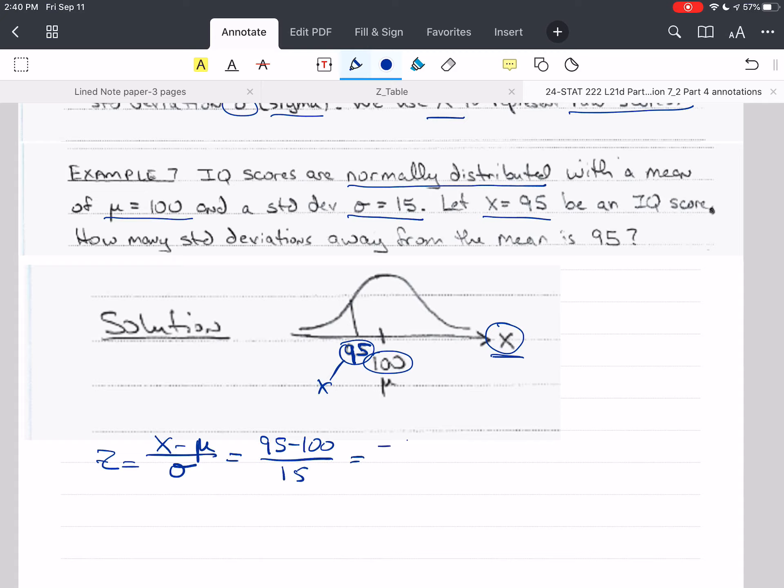So this value is X. And so this value is mu. So 95 minus 100 over sigma, we were given as 15. And so this is going to be negative 5 over 15, which is negative one third, or to two decimal places for a Z score would be negative 0.33. And that is the answer.